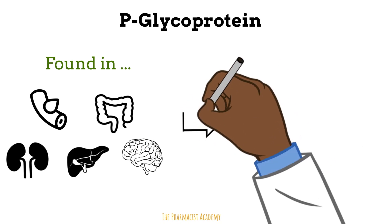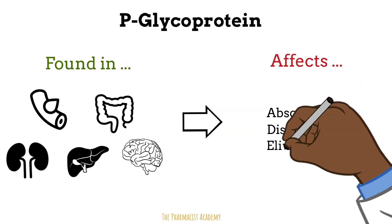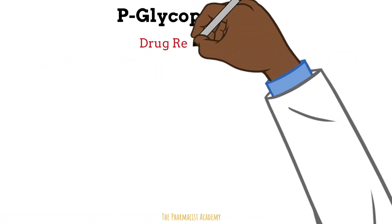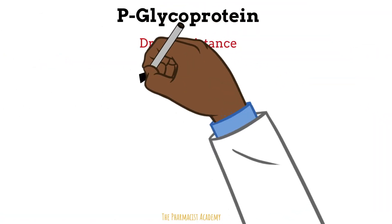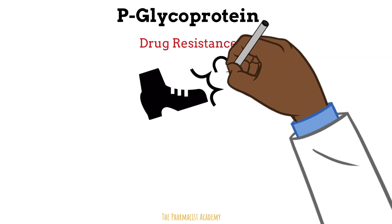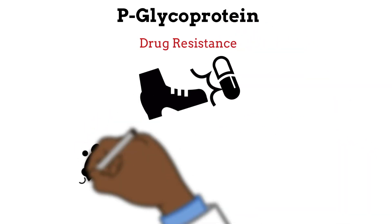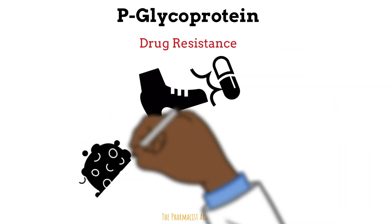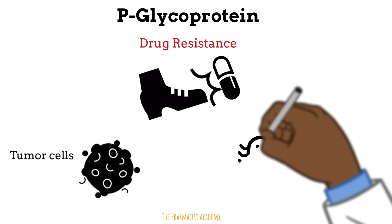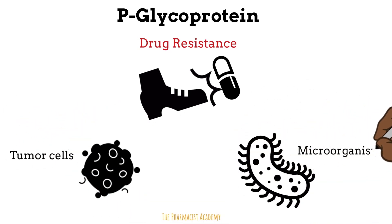Now because of all that, these proteins can affect absorption, distribution, and elimination. The downside to these P-glycoproteins sometimes is that they're able to kick drugs out, and it can lead to drug resistance. This could be found in tumors and also microorganisms such as bacteria and fungi.